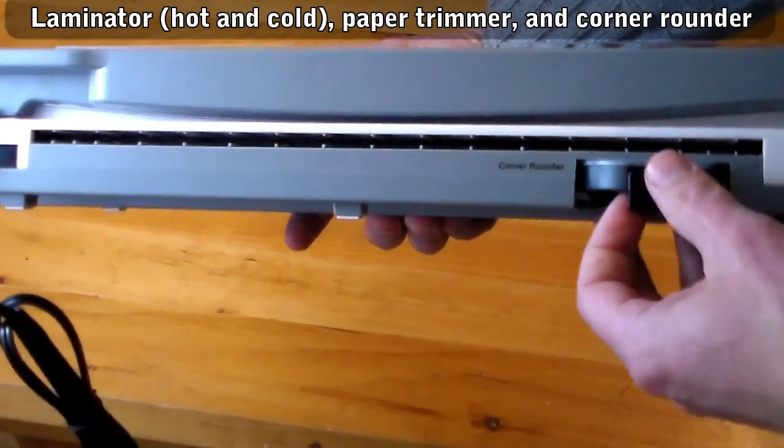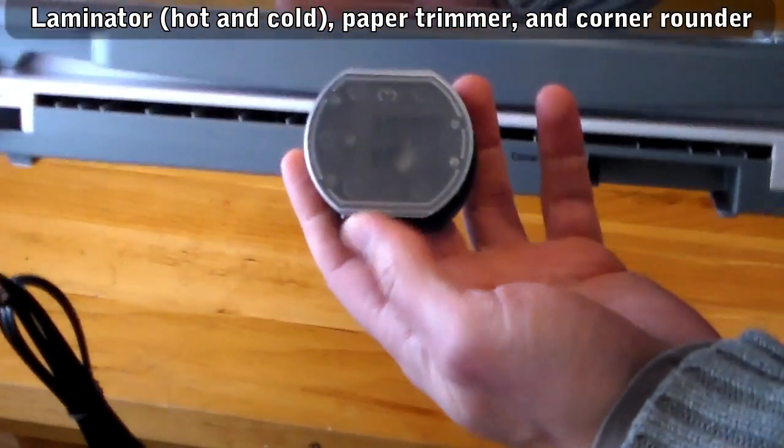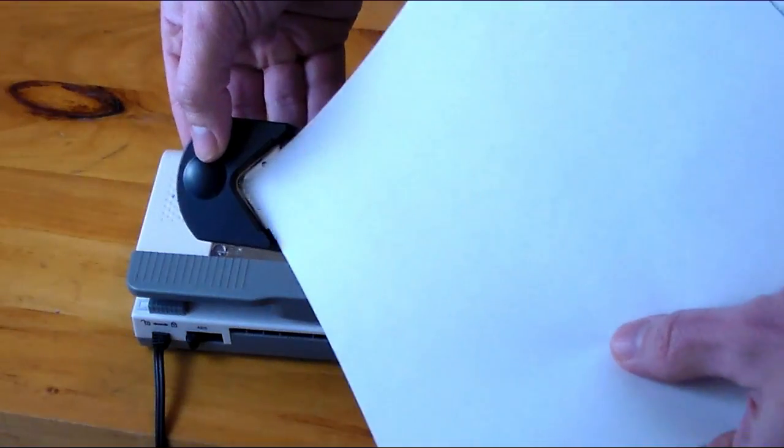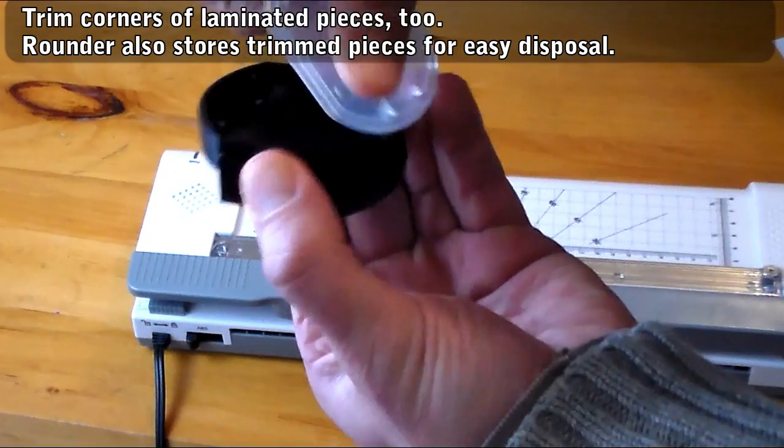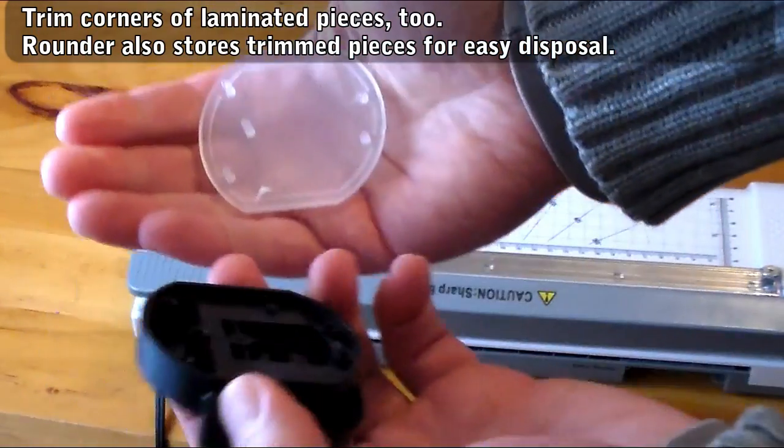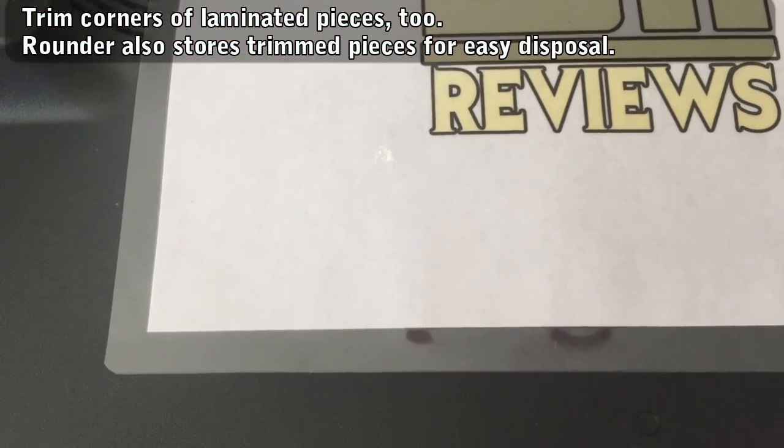The corner rounder is simple, it has a little home on the back of the unit, and you put paper in and clip off the corners. Easy. You can also clip off the corners when you're done laminating something for a nice looking and smooth finished product.